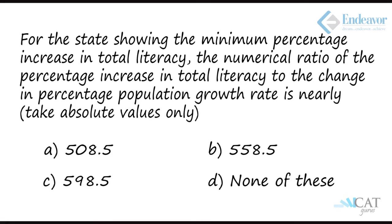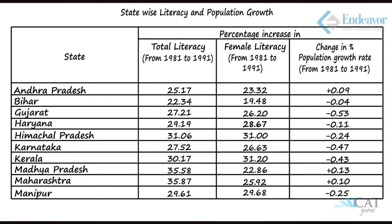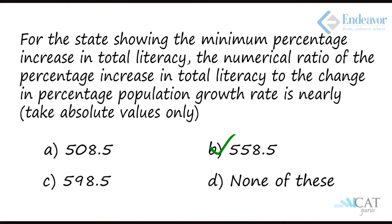Question 2: For the state showing the minimum percentage increase in total literacy, find the numerical ratio of the percentage increase in total literacy to the change in percentage population growth rate. The state with the minimum increase is Bihar at 22%. So the first value is 22.34, and the change in population is minus 0.04. Computing 22.34 divided by 0.04 gives approximately 558.5. Hence option B is the right answer.